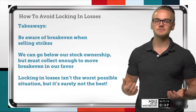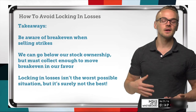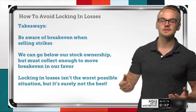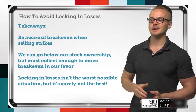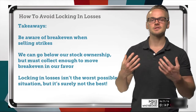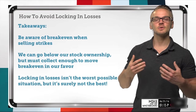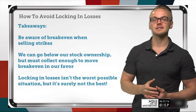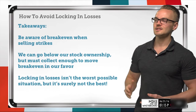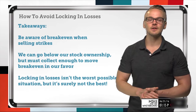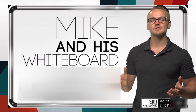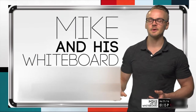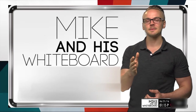To wrap up: the first takeaway is to always be aware of the break-even when selling strikes. Managing the relationship between credit collection and break-even is key to not locking in a loss. We can go below our stock ownership price, but we must ensure the credit moves our break-even lower than the short strike in a covered call. Locking in a $100 loss is still better than a $1,000 loss, but always aim for optimal situations. Thanks for tuning in — send questions or feedback and follow at DoughTraderMike.